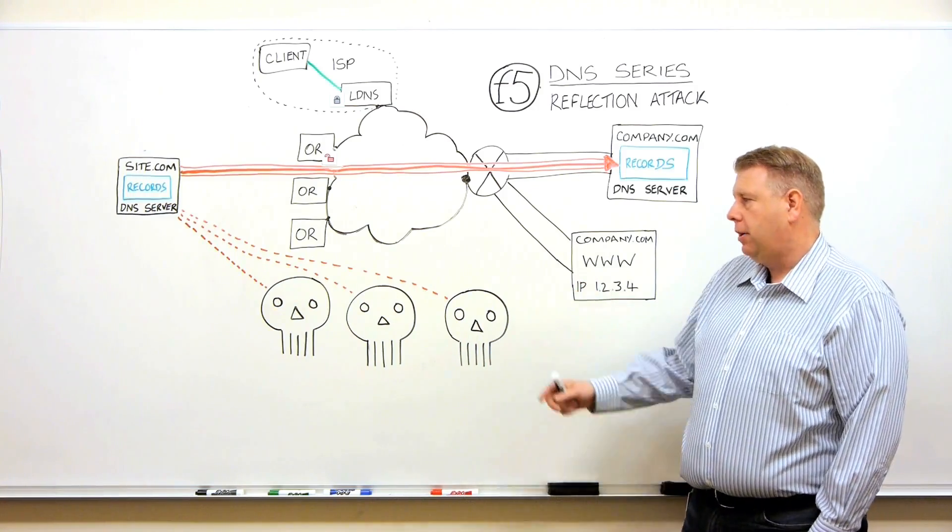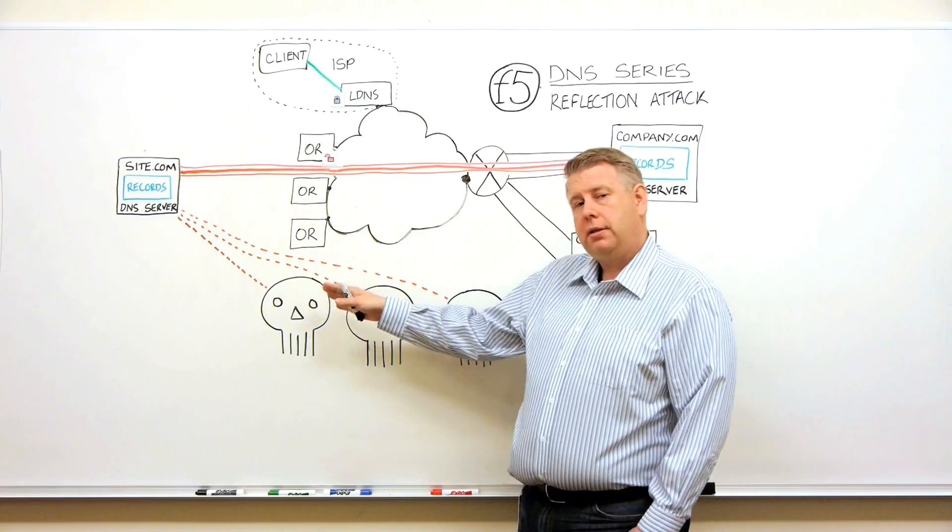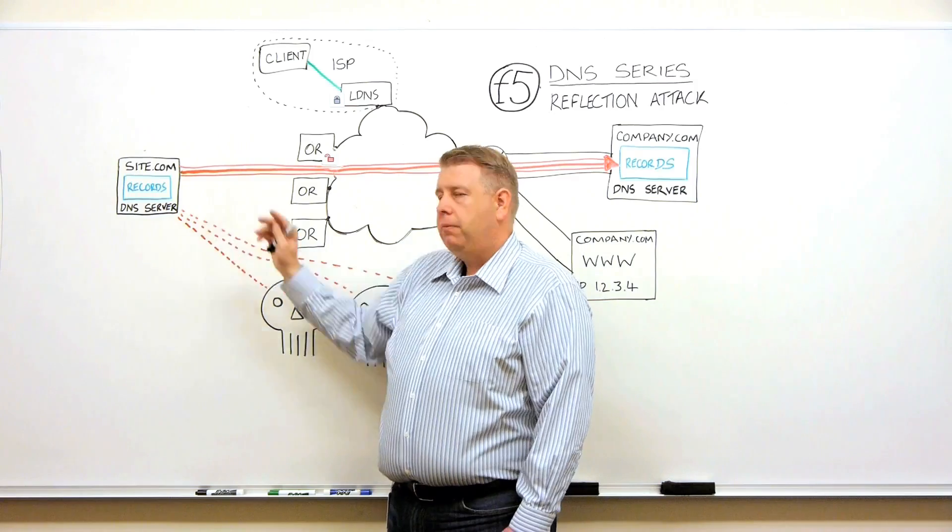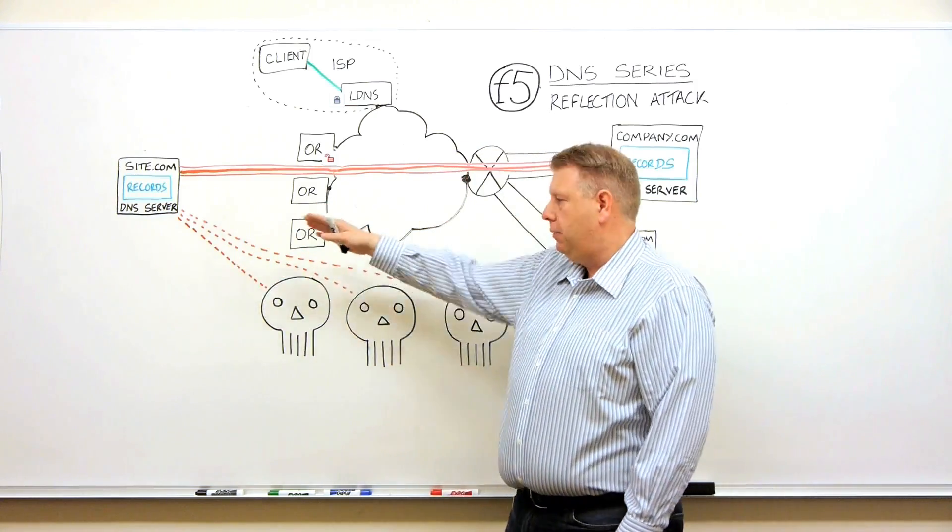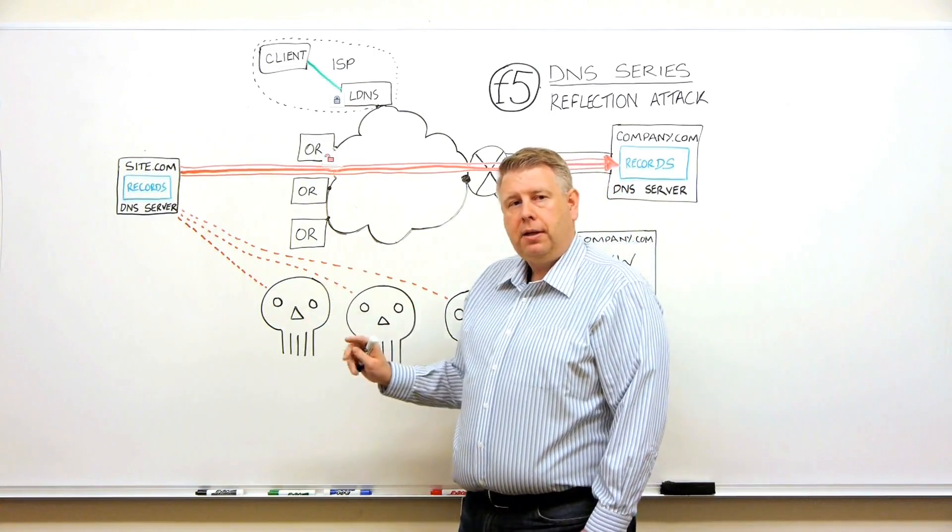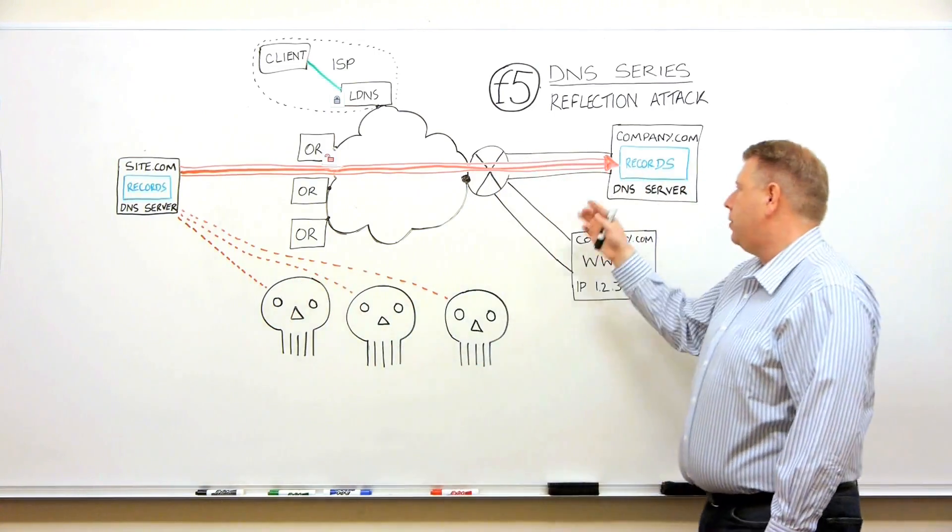In this case, the attackers send out a DNS request to another DNS server, a completely different site. But they're tricky because in the source IP address, they say it came from a different address, the address of their target.